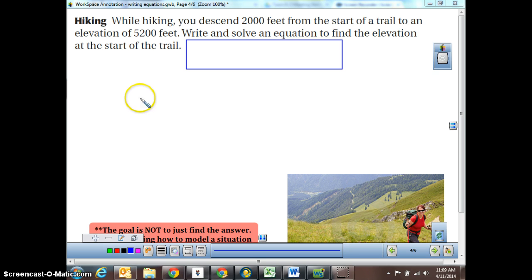So we know that while we're hiking, we go down 2,000 feet. So wherever we start from, when we go down 2,000 feet, we are now at an elevation of 5,200 feet. So you descend, you go down 2,000 feet from the start of a trail to an elevation of 5,200 feet. Write and solve the equation.